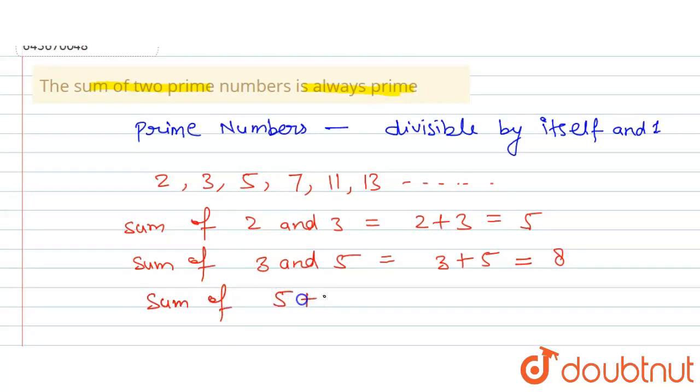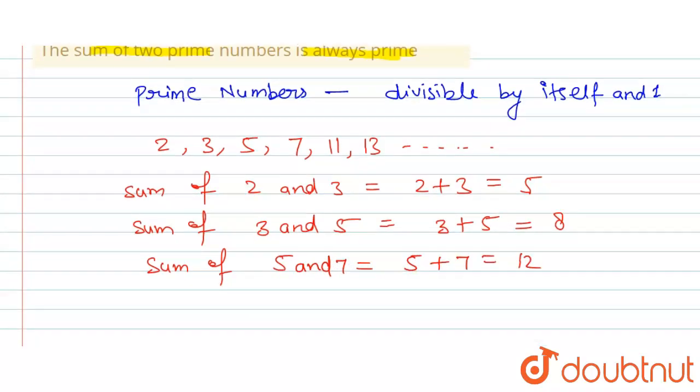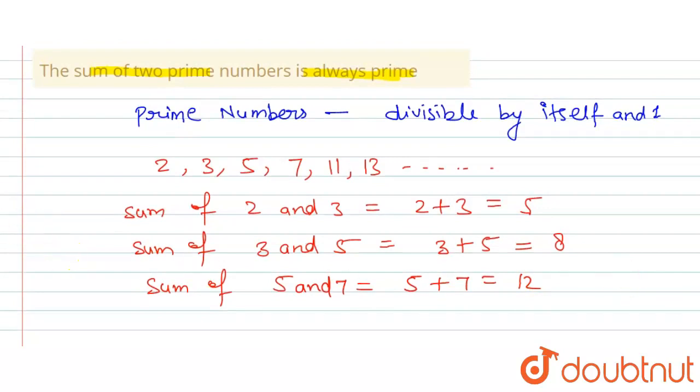5 and 7, this is going to be equal to 5 plus 7 equals 12. 12 is also not a prime number. Hence we can say that